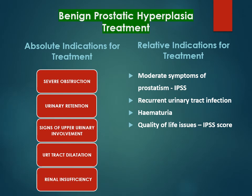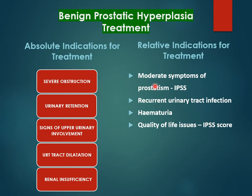Absolute indications for treatment of BPH include severe obstruction, acute urinary retention, signs of upper urinary tract involvement such as hydronephrosis, urinary tract dilatation, and renal failure or insufficiency. Relative indications include moderate symptoms of prostatism assessed by IPSS, recurrent urinary tract infection, hematuria, and quality of life issues — if the patient's life is significantly affected by symptoms, some form of treatment must be initiated.